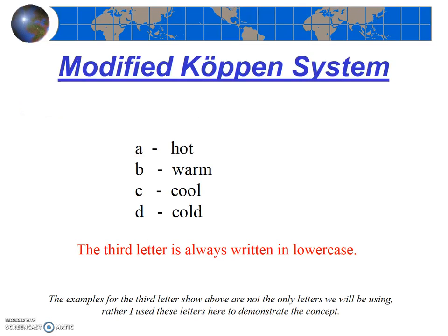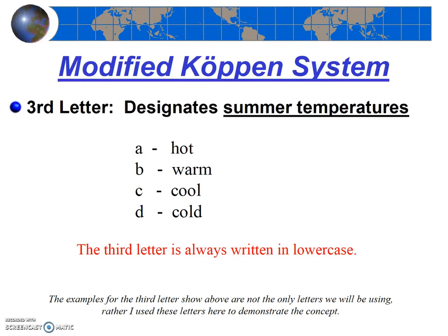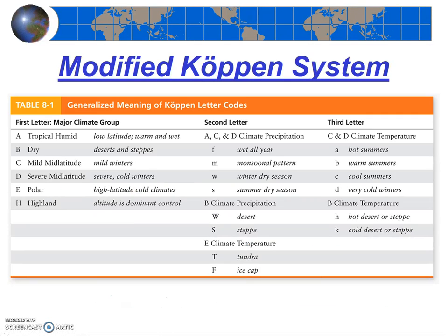The third letter is related to temperature — specifically, usually the summer temperatures, though there are some exceptions. We always write the third letter in lowercase. The most common codes for the third letter are: A for hot, B for warm, C for cool, and D for cold, and again that generally stands for summer temperatures. These letter codes may seem complicated at first, but once you get the hang of it, it's pretty straightforward and even kind of fun to use. Appendix 5 in your textbook defines all the letter codes, and Table 8.1 in your textbook shows the whole system as well — you'll likely end up referring back to this table, so it's a good one to bookmark.